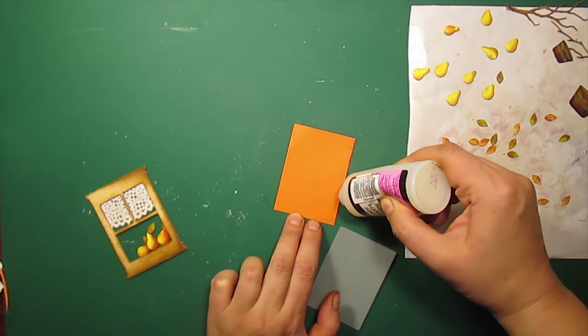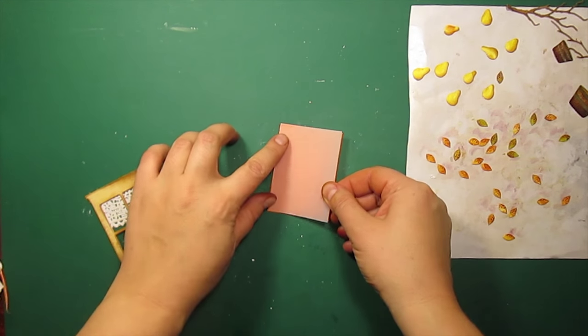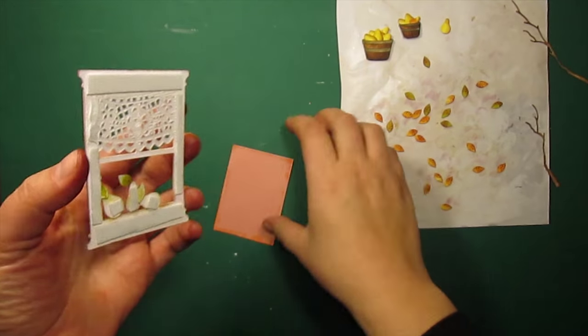Now, I'm sticking a piece of vellum on top of the orange paper and then I'll be attaching it to the window with the mounting tape.